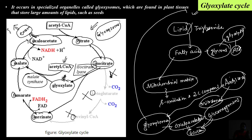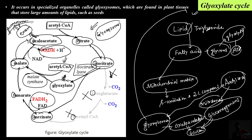Oxaloacetate is very important because it then enters gluconeogenesis and finally glucose is produced.